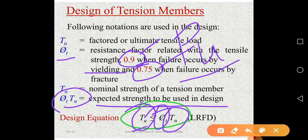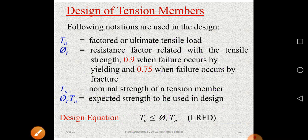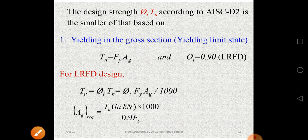To recap: Tu is the factored ultimate tensile load, where the factor means 1.2 times dead load plus 1.6 times live load, as we use those load combinations. φt is the resistance factor — 0.9 for yielding, 0.75 for fracture. Tn is the nominal strength obtained using the LRFD design aid, and φt·Tn is the design strength, since we have multiplied by the resistance factor.